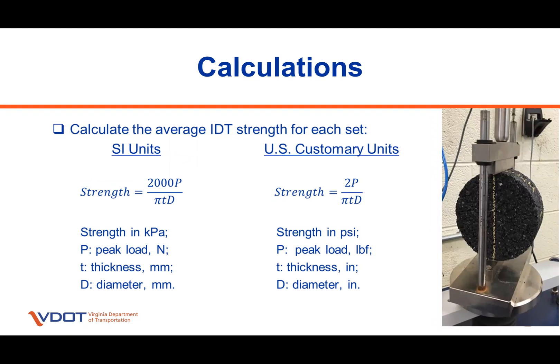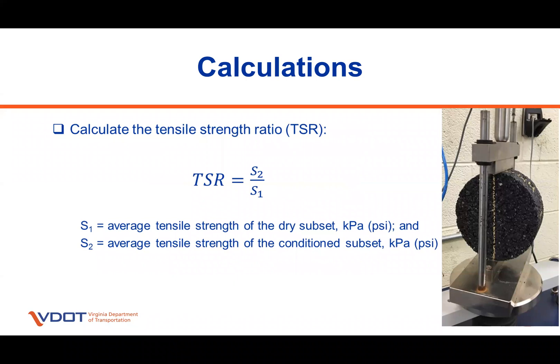Calculating the strength: once the test is performed in accordance with the standard, the tensile strength for the dry and conditioned sets can be calculated using the equation shown in this slide, depending on the system of measurement you use. P is the peak load from the load-displacement curve, T is specimen thickness or height, and D is specimen diameter. Once the average tensile strength for the dry and conditioned sets is calculated, we calculate the tensile strength ratio, or TSR, which is the ratio of the average tensile strength of the conditioned set to the average tensile strength of the dry set.